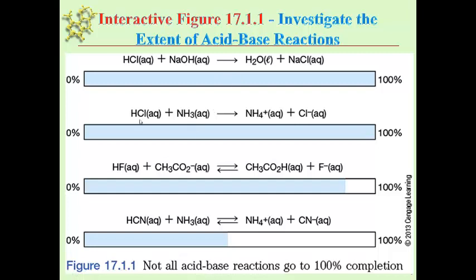For the second example, we have a strong acid and a weak base. On the right-hand side, we have the ammonium cation and the chloride anion. Because HCl is so much stronger than NH3, this will run to completion — essentially 100% on the right-hand side. However, unlike the first reaction, you have products that actually have properties of an acid. NH4+ has acidic properties, so this would not be neutral when it reaches completion — it will actually be slightly acidic because of NH4+.